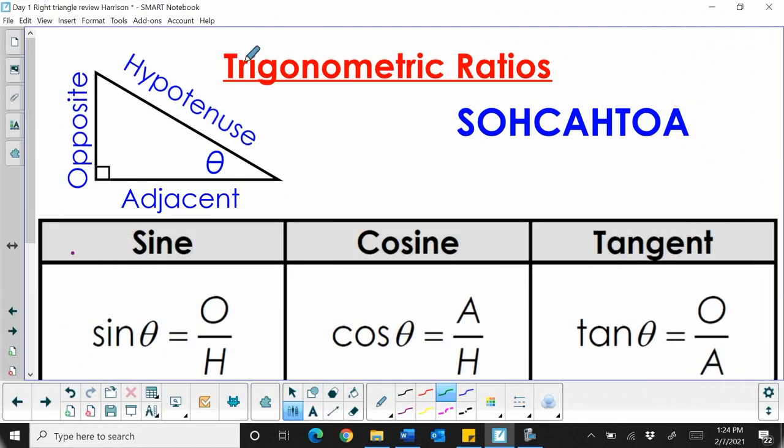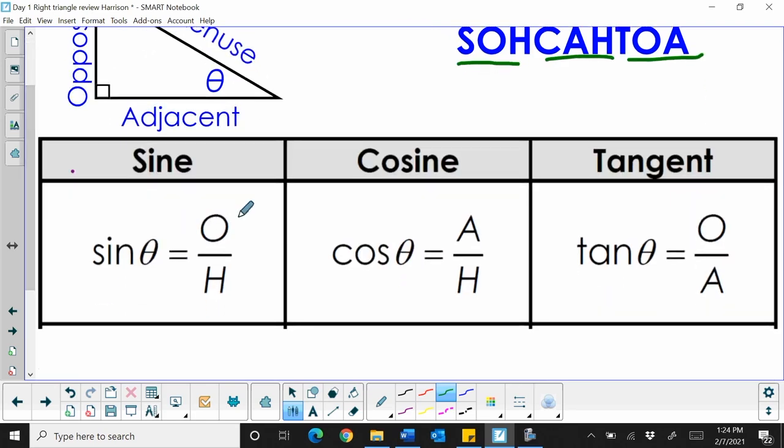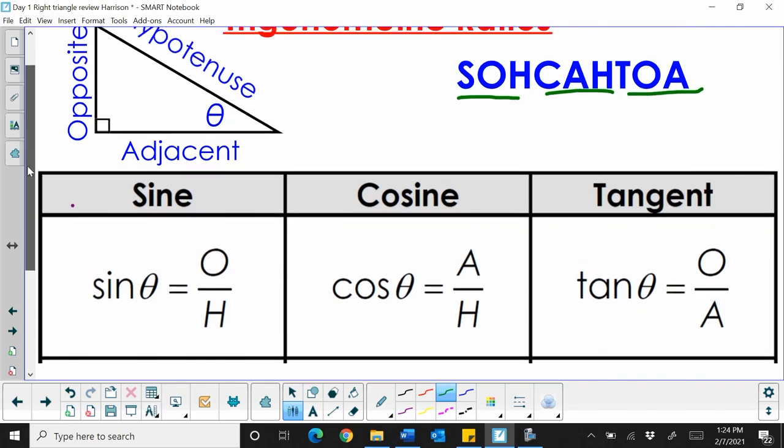And review trig ratios. So our trig ratios are sine, cosine, and tangent, where sine is your opposite over hypotenuse. Cosine of an angle is adjacent over hypotenuse, and tangent of theta is equal to opposite over adjacent. And a lot of you learned just SOH CAH TOA to help us remember that.